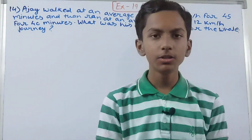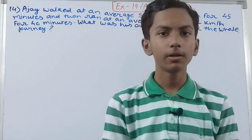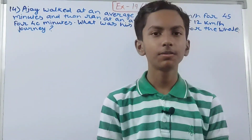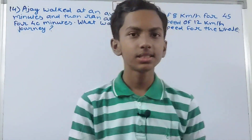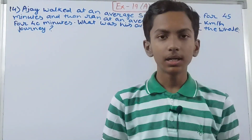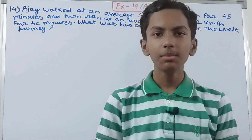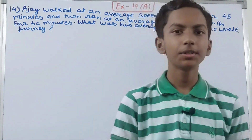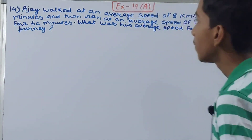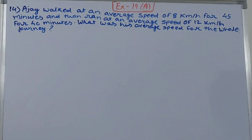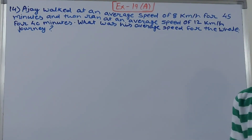Hello friends, welcome back to my YouTube channel. In this video we are going to solve ICAC Mathematics Class 7, Chapter 19: Speed, Time and Distance, Exercise 19, Question 14. The question says: Ajay walked at an average speed of 8 kilometers per hour for 45 minutes, and then ran at an average speed of 12 kilometers per hour for 40 minutes. What was his average speed for the whole journey?